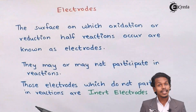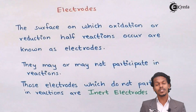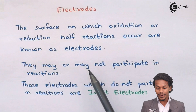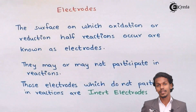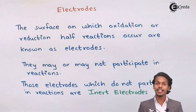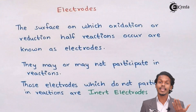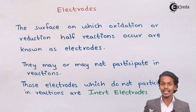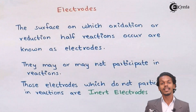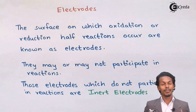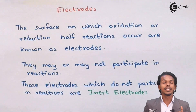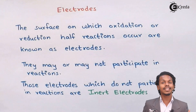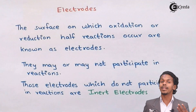Since there is a possibility of a chemical reaction occurring, electrodes may or may not participate in the reaction. There are some electrodes that participate in the reaction and contribute towards the formation of electricity — converting chemical energy into electrical energy, or electrical energy into chemical energy.